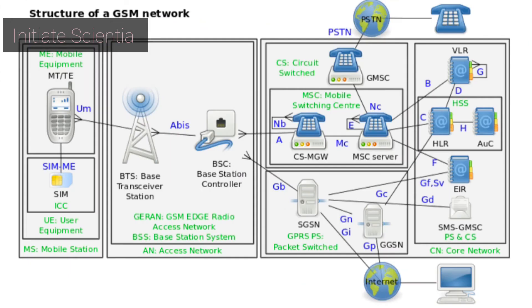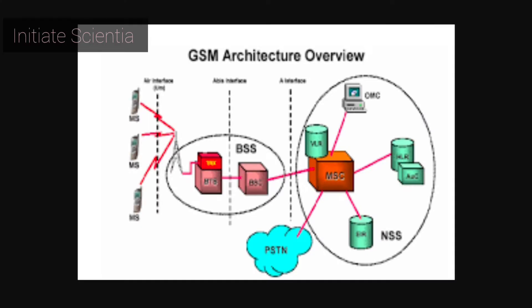GSM digitizes and compresses data then sends it down to a channel with other two streams of user data, each in its own time slot.